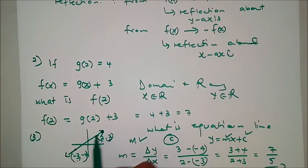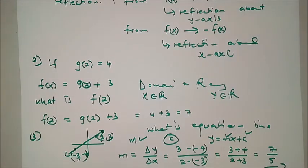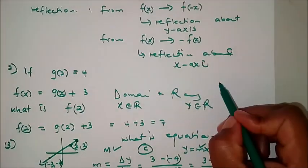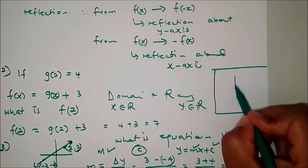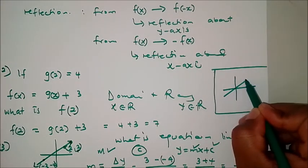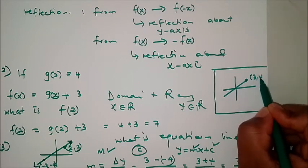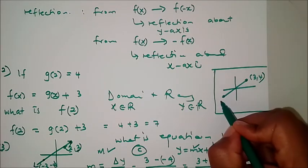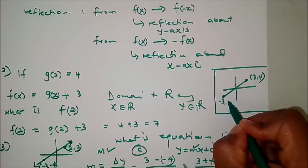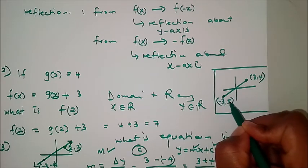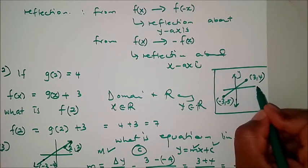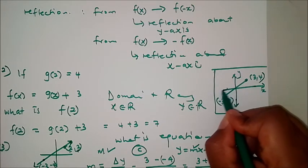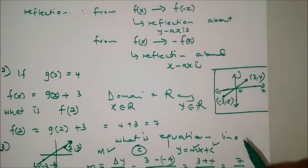But if there are dots at the endpoints — for example a function from (-3, -5) to (3, 4) — that means the function stops at those points. So you need to read off the coordinates of the dots.